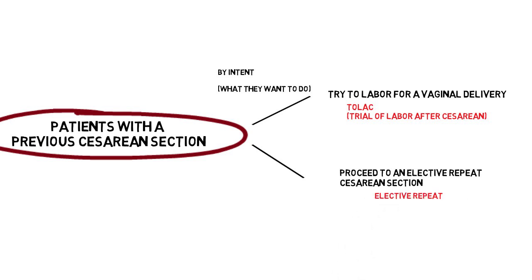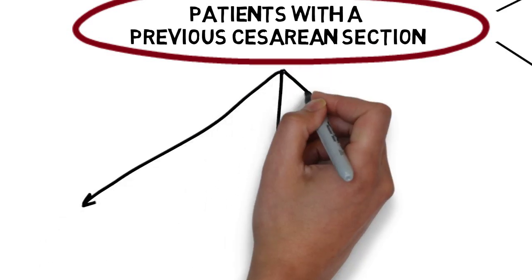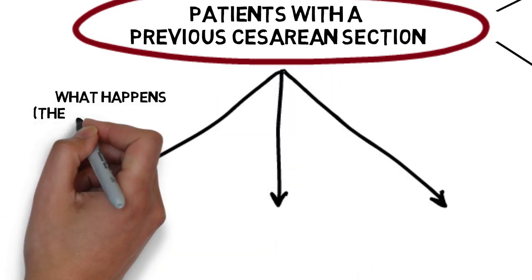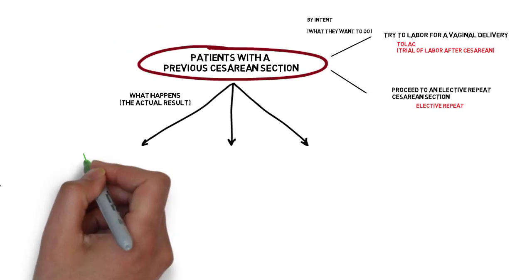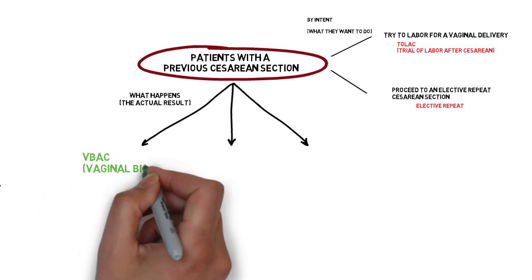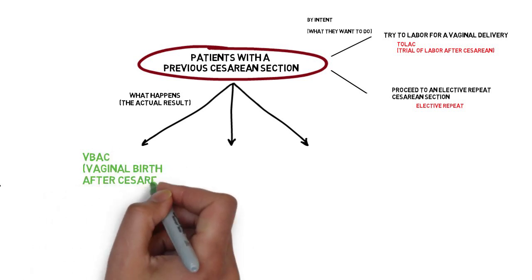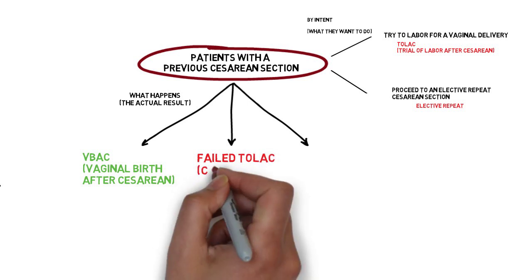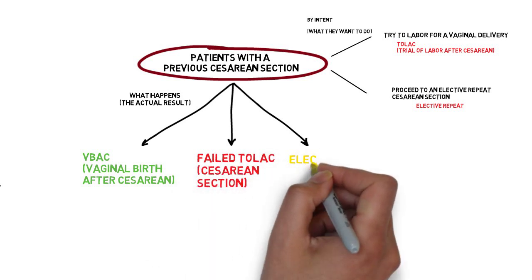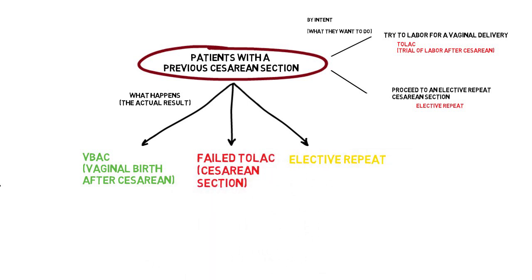Here, we are dividing them according to what they will do. Ultimately, we will classify them by what happens or the result. Here, there are three categories: VBAC, which is Vaginal Birth After Cesarean, Failed TOLAC, and elective repeat. If the outcomes in these groups are all the same, this wouldn't be worth talking about. The outcomes aren't the same.